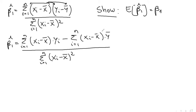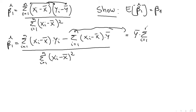Notice that ȳ does not depend on i — it's the same number in each term of this summation, so we can just pull it out. This gives us ȳ times the sum from i equals 1 to n of (xᵢ minus x̄). Now notice that the sum of deviations of x from its mean is always equal to 0.